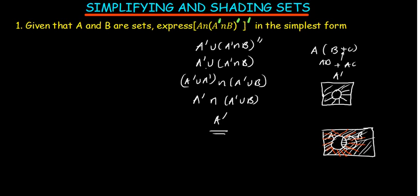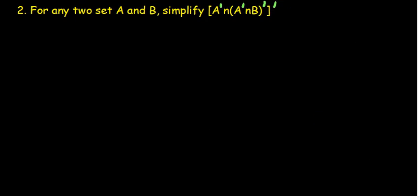A complement is the simplest form — we can leave it in that form. For the second problem: for any two sets A and B, simplify A complement intersection (A complement intersection B complement), complement. Again I'm first going to distribute the complement outside everything. That gives A complement with another complement — A complement complement is simply A — and the sign changes to union. Then we have A complement intersection B, and A complement complement again just cancels to give A union A complement intersection B.